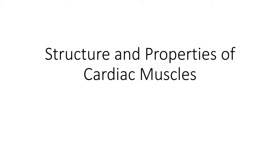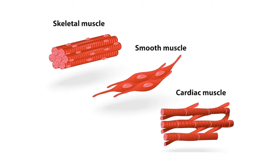In this lecture, I will go over the structure and properties of cardiac muscles. There are three main types of muscles in our body: the skeletal, the smooth, and the cardiac muscles. Many cells together form a tissue, and tissues together form an organ. In skeletal muscle, the cells are arranged longitudinally and are cylindrical. In smooth muscles, there are spindle-shaped cells.